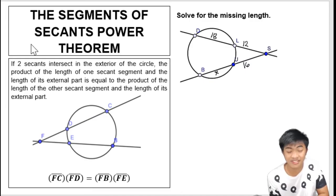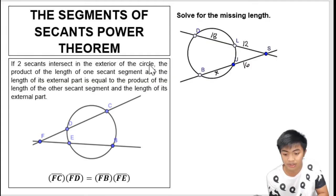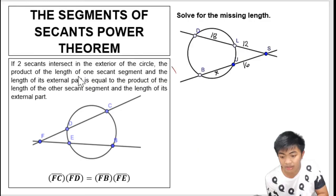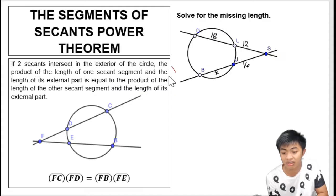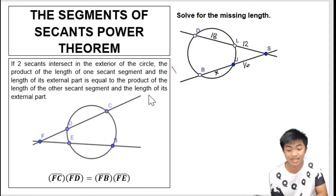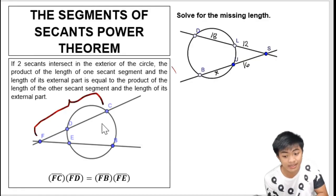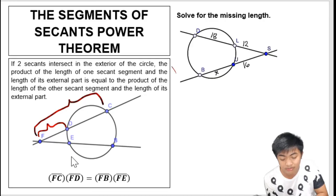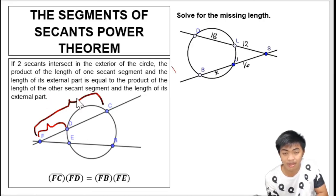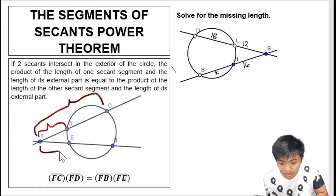Next theorem: the segments of secants power theorem. If two secants intersect in the exterior of the circle, the product of the length of one secant segment and the length of its external part is equal to the product of the length of the other secant segment and the length of its external part. So if we multiply the whole secant segment — from the intersection to the endpoint — times the external part, that equals the length of the other whole secant segment times the length of its external part.